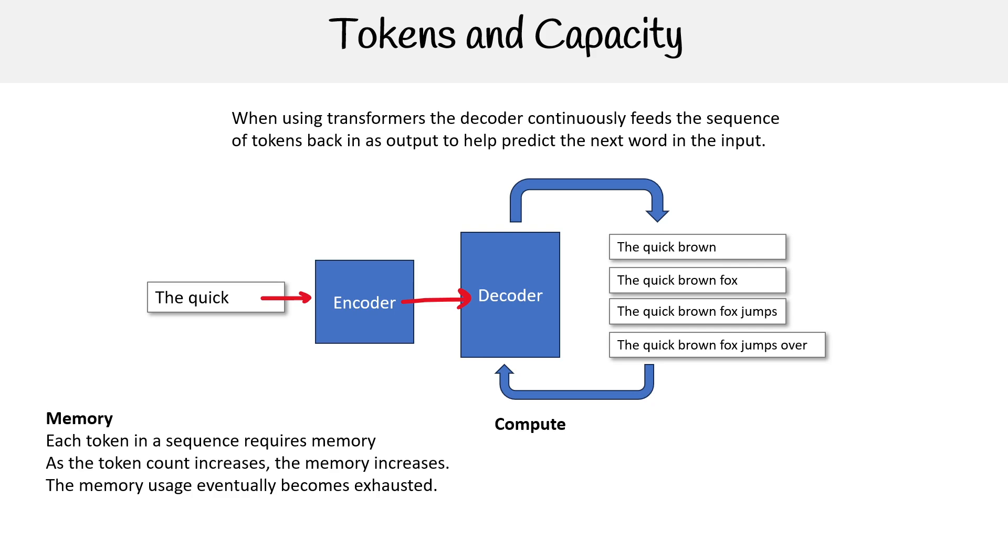For compute, a model performs more operations for each additional token. The longer the sequence is, the more compute is required.